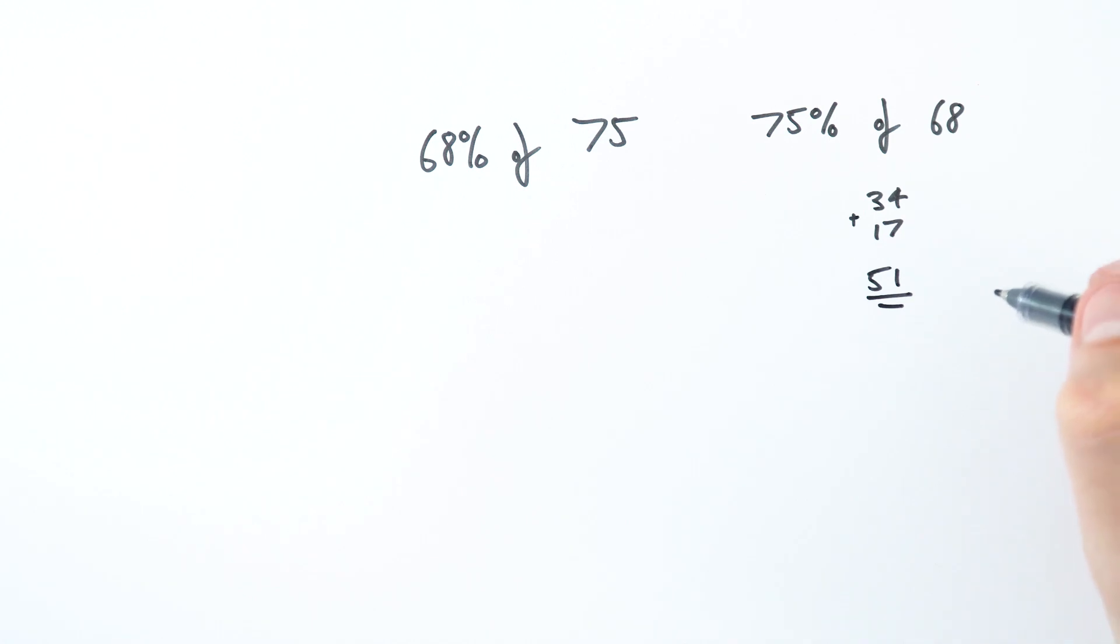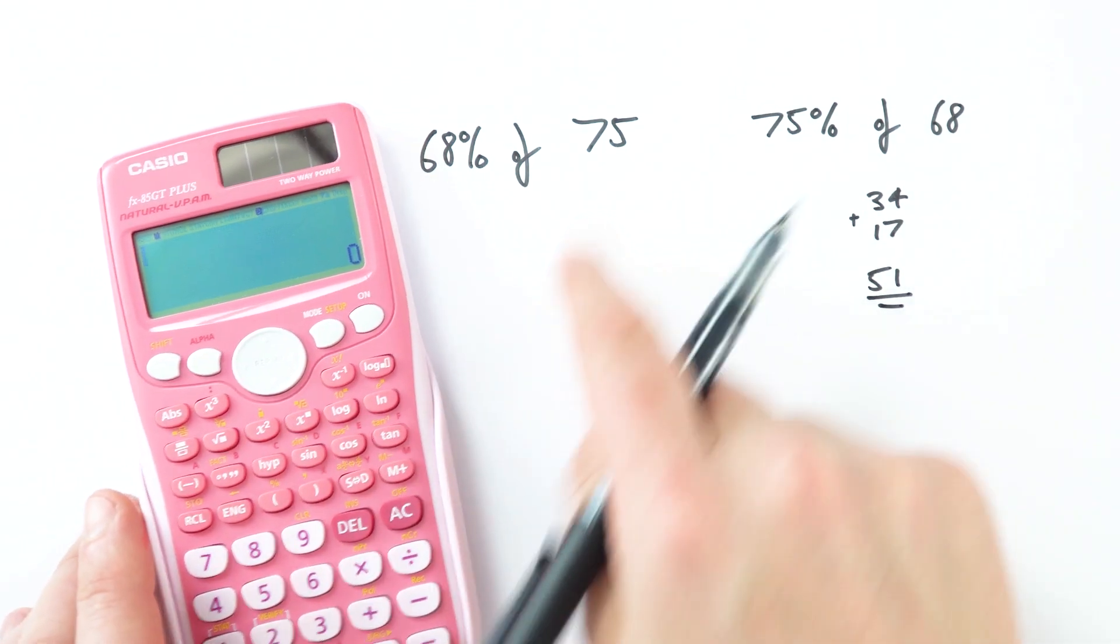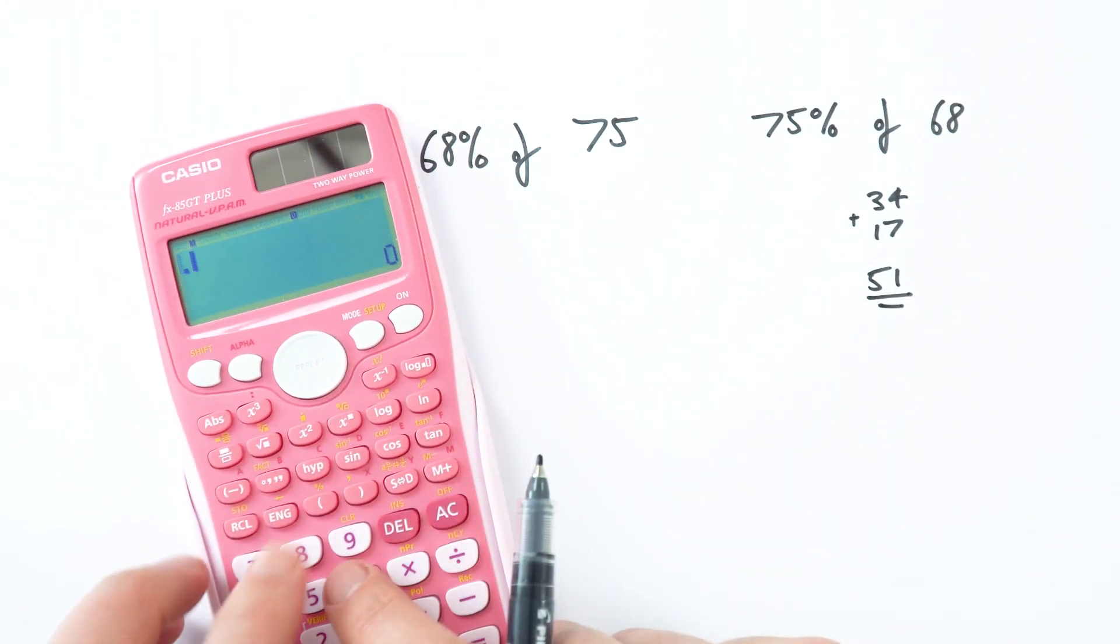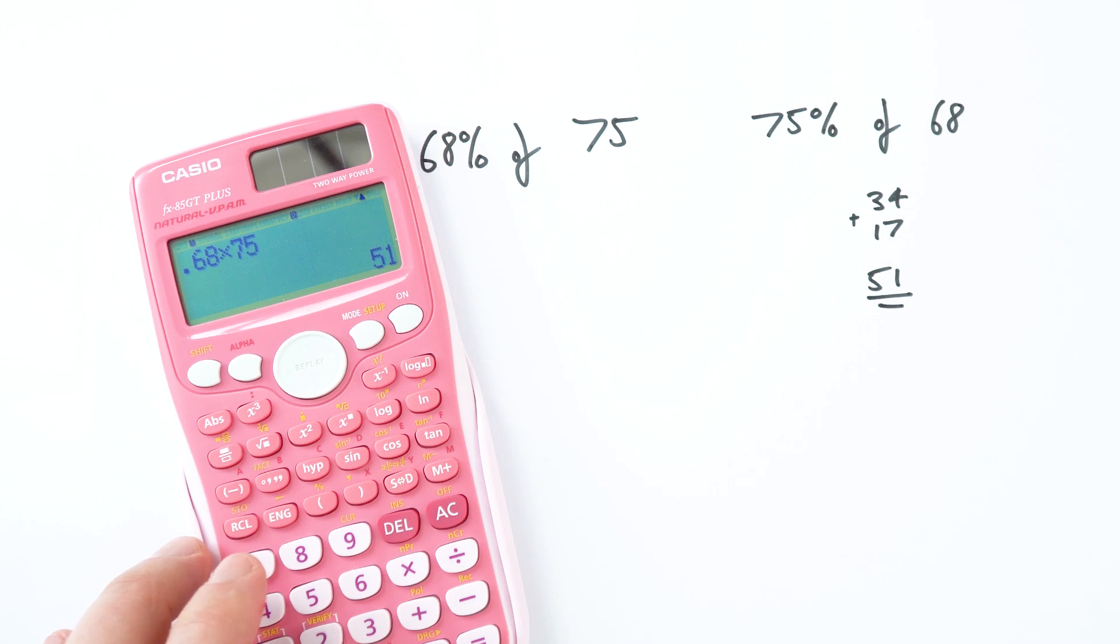And that's the final answer. Now if I just check this on my calculator, if I wanted to work out 68% of 75, I'd do 0.68 multiplied by 75, which is also 51.